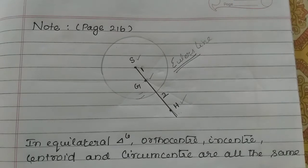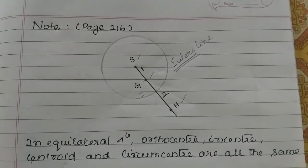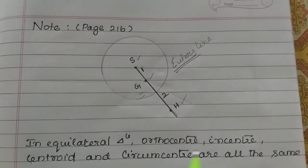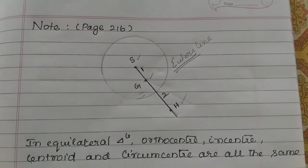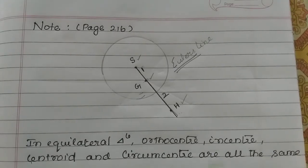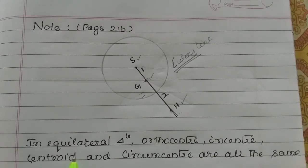In an equilateral triangle, the orthocenter, incenter, centroid, and circumcenter are all the same point, because all three sides are equal.